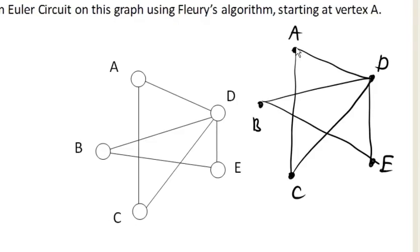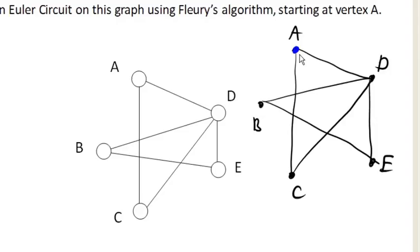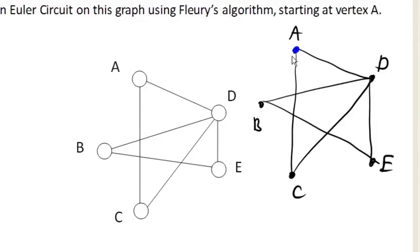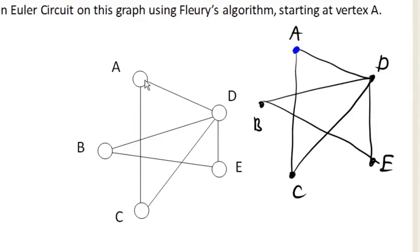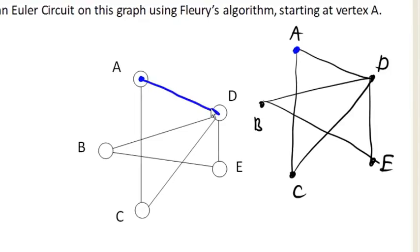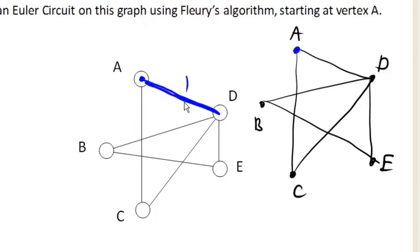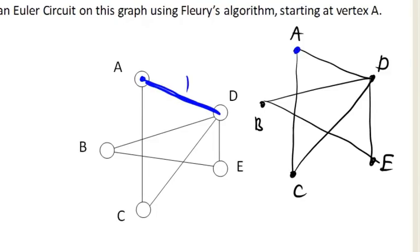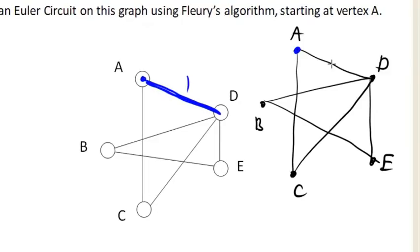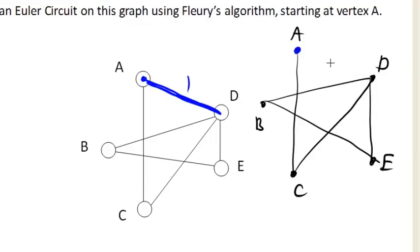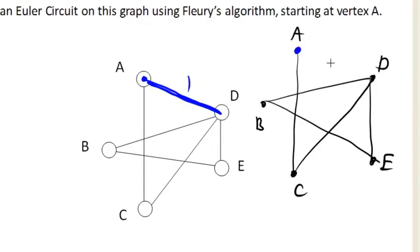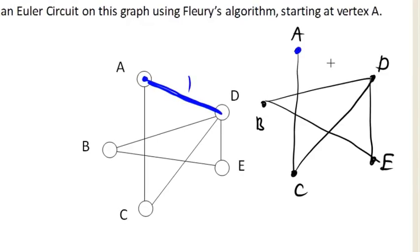So let's say we pick A as our starting point here, and the edge that we choose is A to D. So A to D is not going to disconnect the graph, so we'll go ahead and add that in as our first step. Now over here, in our duplicate copy, we're going to delete that edge.